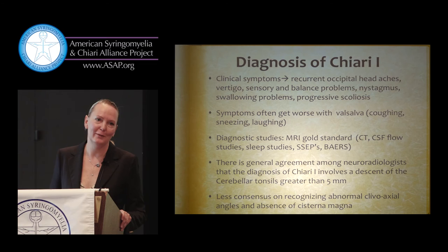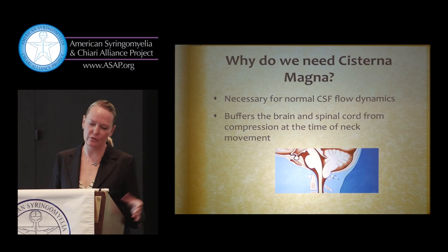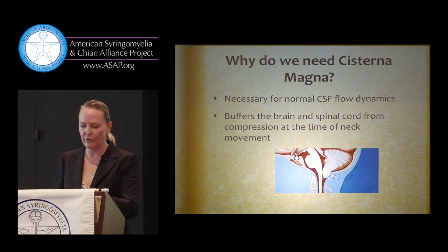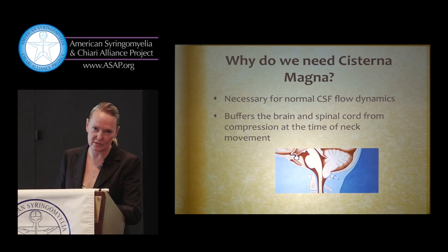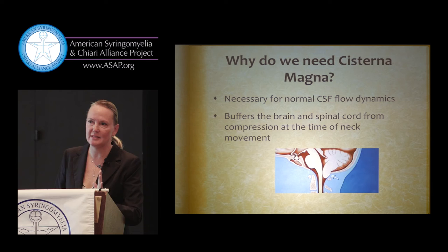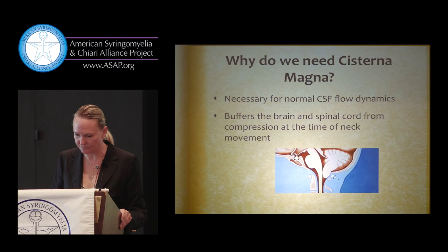So why does the cisterna magna matter? The cisterna magna is a buffer that protects the brain and spinal cord from compression when we move our neck, and it also allows for normal circulation of CSF. If there's any blockage in these pathways we see hydrocephalus — that's an easy pick-up. But the circulation around the spinal cord goes both ways — anteriorly, posteriorly, and through the fourth ventricle — so if there's still some circulation left, you don't necessarily see a problem as fast as you would with a blockage at the third ventricle causing frank hydrocephalus.